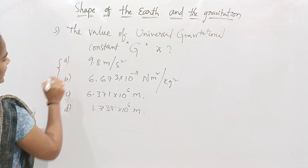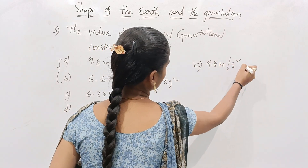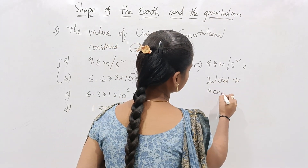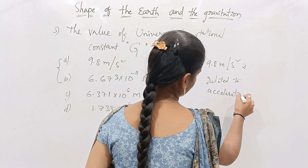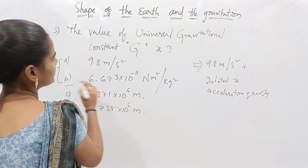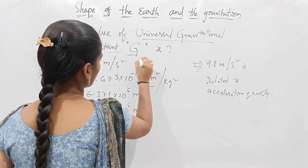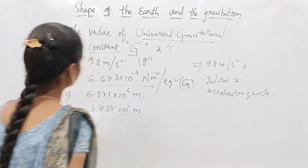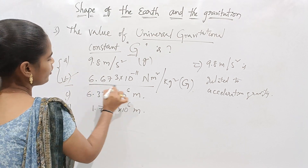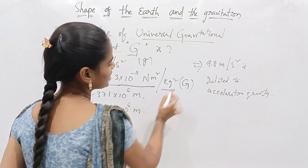Don't get confused between Option A and Option B. Option A, 9.8 meters per second squared, is related to acceleration due to gravity — that is small g. Option B is the value of the universal gravitational constant, capital G. So the correct answer is Option B: 6.673 × 10⁻¹¹ newton meter squared per kilogram squared.